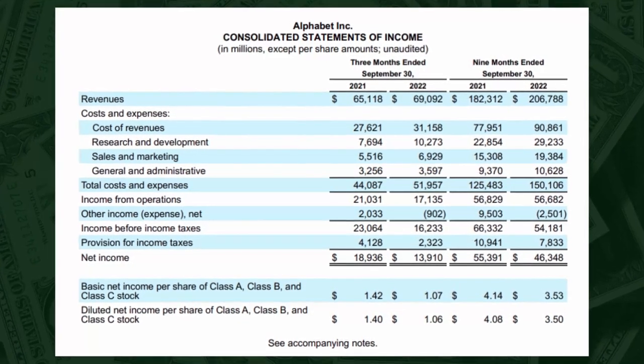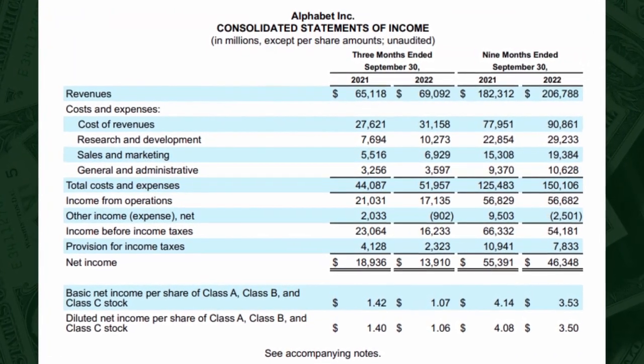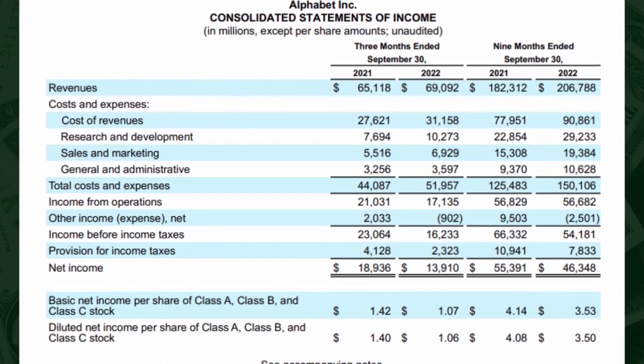Hi there, and welcome to the second part of the series on how to read financial statements like Warren Buffett. When I first started investing, I was having a hard time understanding financial statements. So I wanted to make this series to explain how to look at financial statements to even those who know the bare minimum. In this video, we will be talking about the income statement, what every line means, some important ratios, and finally, what Buffett looks for in an income statement.